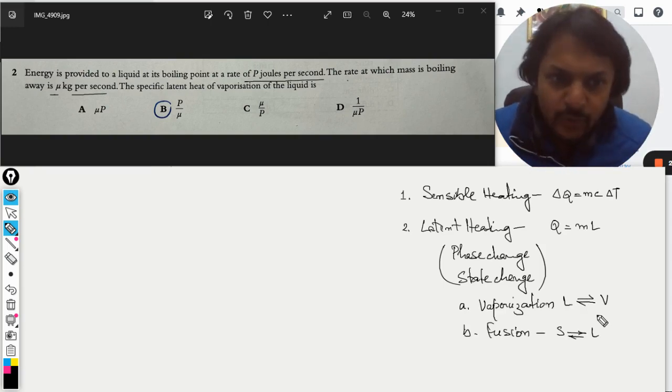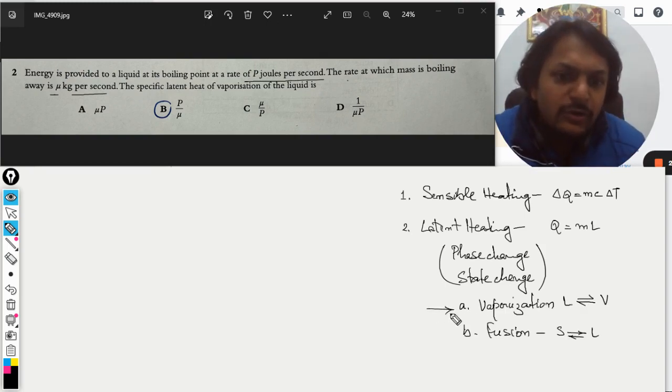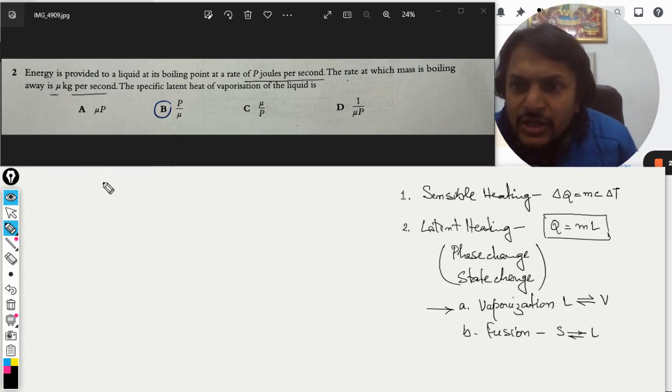Now in this case the boiling process is taking place, so we are talking about vaporization. The formula used will be Q equals mL. Q equals mL, what does it mean? It means the heat energy that was supposed to be given is the product of mass multiplied by the latent heat.